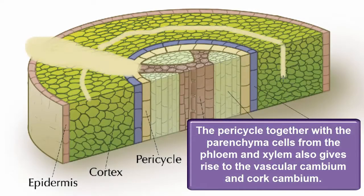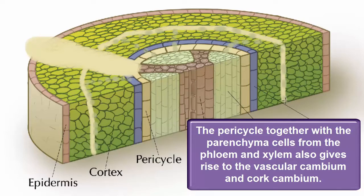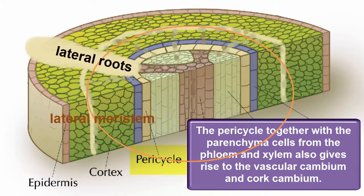In woody plants, a second cambium, the cork cambium also arises in the pericycle outside of the vascular cambium and gives rise to cork tissue periderm. In short, the pericycle aside from initiating lateral roots also give rise to lateral meristems with the assistance of some parenchyma cells associated with the vascular cylinder.